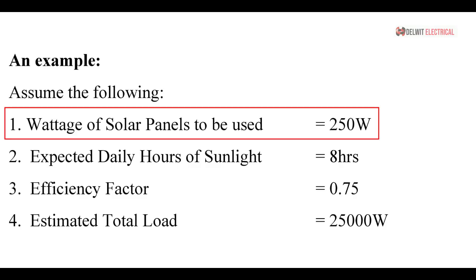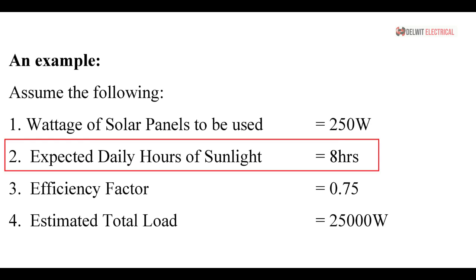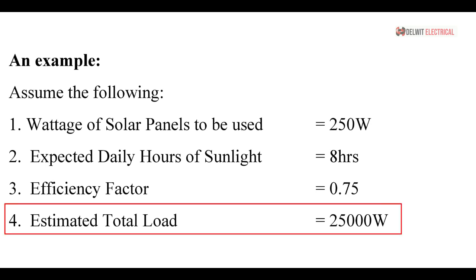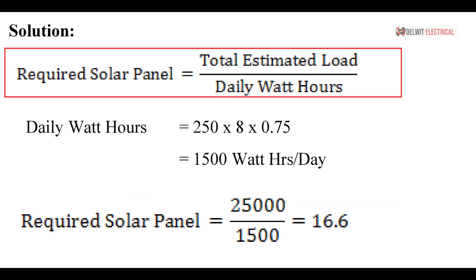Let's work through an example. Wattage of solar panels to be used: 250 watts. Expected daily hours of sunlight: 8 hours. Efficiency factor: 75%, which is 0.75 — this can be gotten from the data sheet of the solar panels to be used. Approximate total load of the system we want to connect: 25,000 watts.